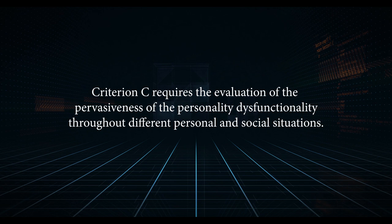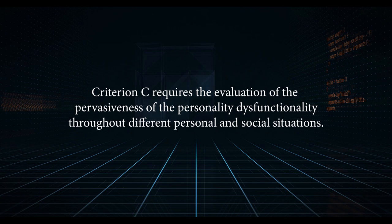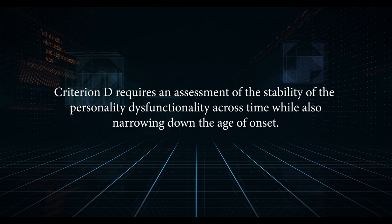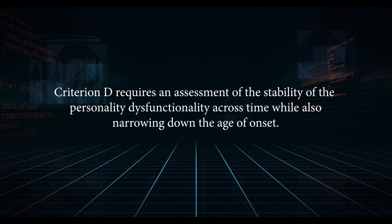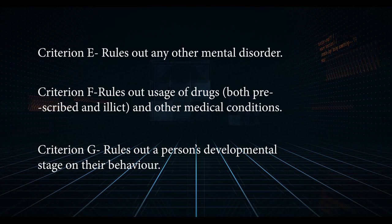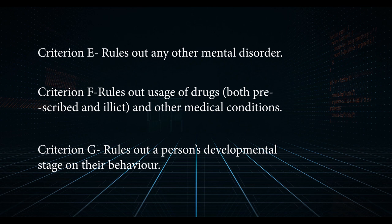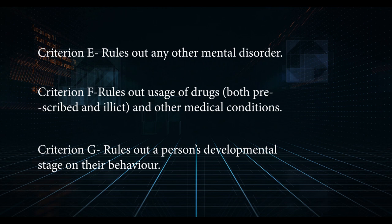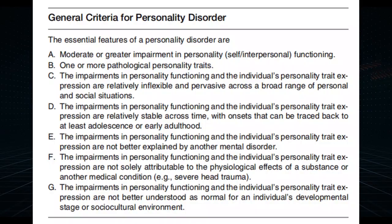Criterion C requires evaluation of the pervasiveness of the personality dysfunctionality throughout different personal and social situations. Criterion D requires an assessment of the stability of the personality dysfunctionality across time, while also narrowing down the age of onset. Criteria E, F, and G necessitate the ruling out of alternative explanations for the personality dysfunctionality — specifically the presence of another mental disorder, usage of drugs or another medical condition, and the impact of a person's developmental stage on their behavior, respectively.